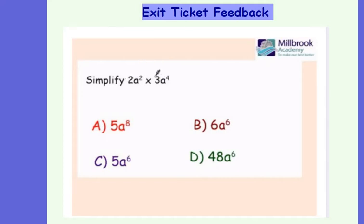The second question I asked you to simplify 2a squared times 3a to the 4. Now in the lesson we went through, we want to separate our numbers and our letters. So let's look at our numbers first. 2 times 3 gives me 6.